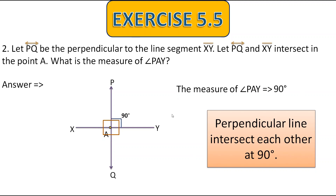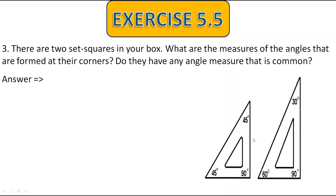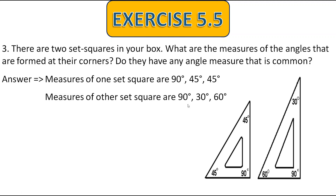Now let's move to the third question. There are two set squares in your geometry box. Many children don't know what a set square is — in your geometry box you have two things in a triangular shape, those are called set squares. The question asks: what are the measures of the angles formed at their corners? The measures of one set square are 90°, 45°, and 45°, and the other measures 90°, 30°, and 60°.